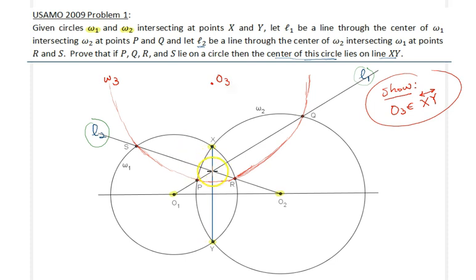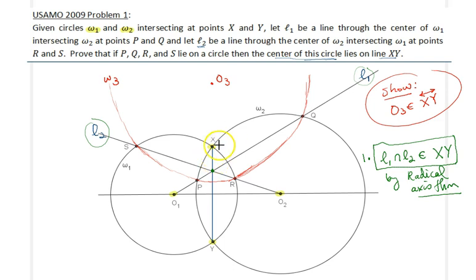Therefore, line L1, L2, and XY here are the three radical axes of these three circles. By the radical axis theorem, I know that these three lines will concur at the radical center. So therefore, this shows us that the intersection of L1 and L2 lies on the line segment XY. That's the first important result by radical axis theorem. So now I know that these three lines L1, L2, and XY, they all meet at this unique point. Let's call this point N.